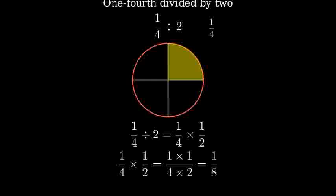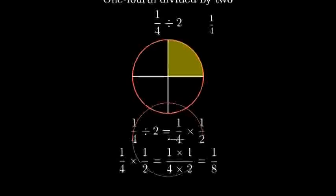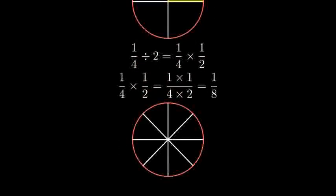Let's visualize what one-eighth looks like. Here's our circle now divided into eight equal parts, with one part shaded to represent one-eighth. Notice how this is half the size of our original one-fourth piece.